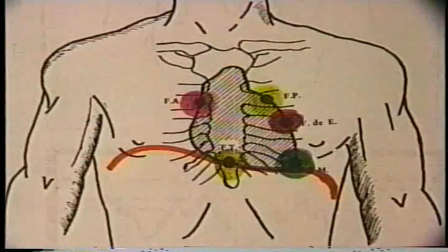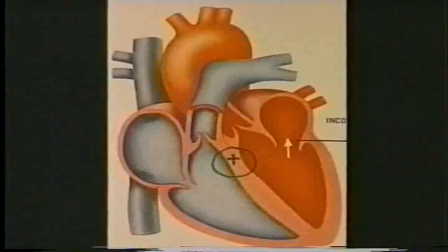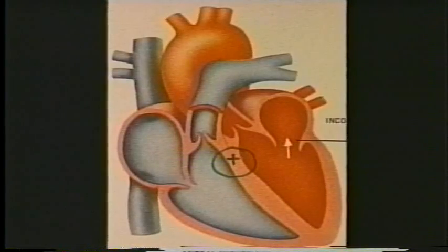Hay que señalar que la actividad del corazón origina ruidos, y sólo por excepción algunos sonidos, como son los soplos musicales. Esos ruidos se deben a fenómenos vibratorios de las paredes del corazón, de sus formaciones intracavitarias y del contenido hemático. Hay que recordar que normalmente, y en relación con la línea media del tórax, un tercio del corazón está a la derecha y dos tercios a la izquierda, y que está acostado oblicuamente sobre el diafragma.